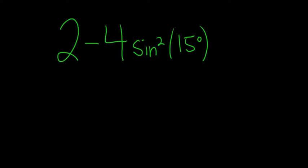Write as a single trig function or number in exact form. Solution. In this problem we have to use one of the double angle identities. The one we'll use is the one that has sine squared: cosine 2x equals 1 minus 2 sine squared x.